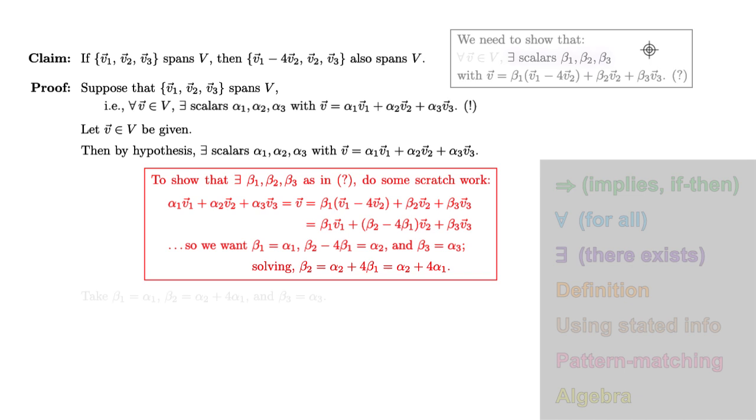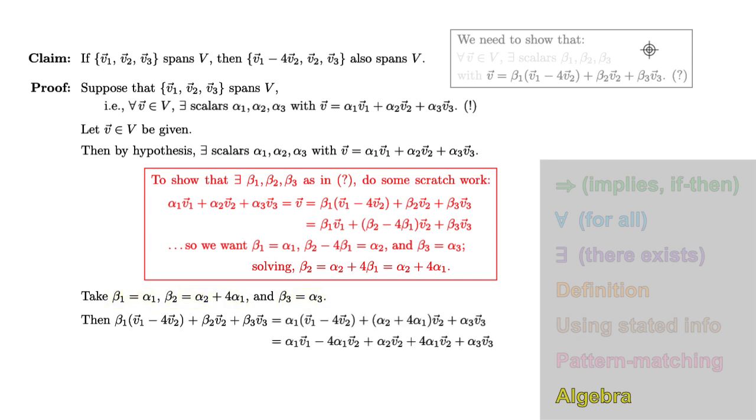Back in our proof, we're ready to take our betas as in our scratch work. Now all that's left is to show an equation. Let's write down the more complicated side and use what we know to simplify. Well, we can plug in the betas that we took from above, multiplying that out and simplifying, we end up with alpha1 v1 plus alpha2 v2 plus alpha3 v3. And we already know from above that this equals v. This is all that was left to show, so we've completed our proof.